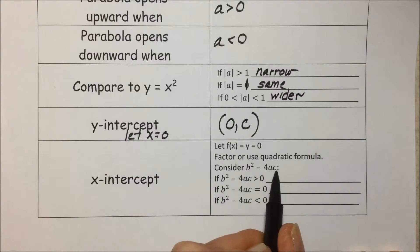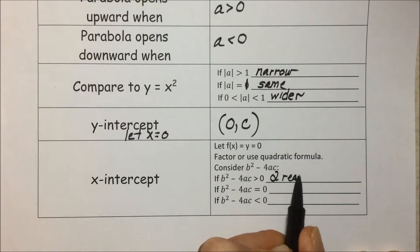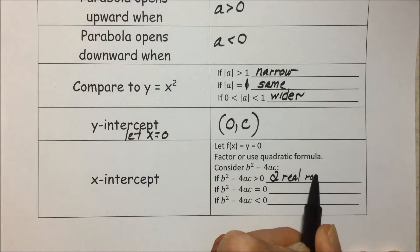If that discriminant is greater than 0, it means that we have two real roots. It could be rational or it could be irrational.